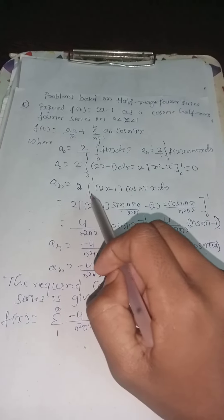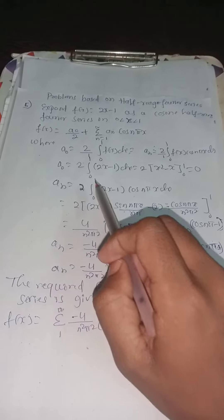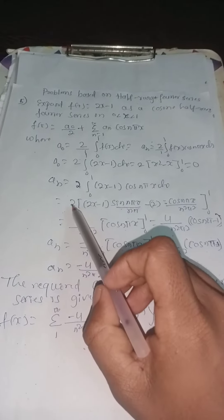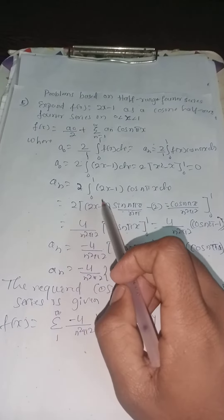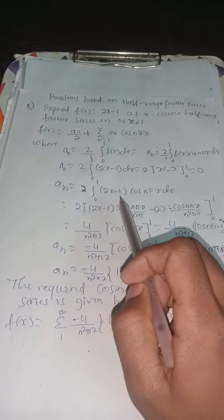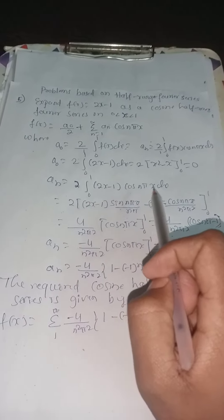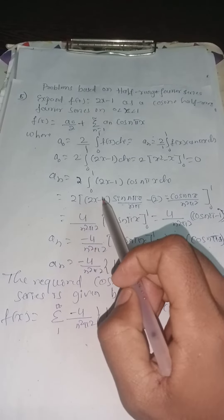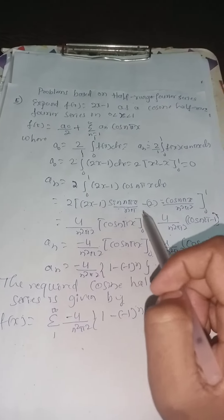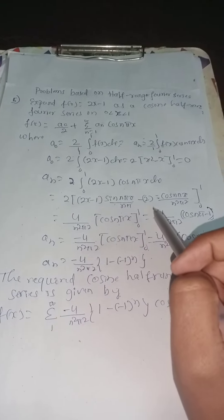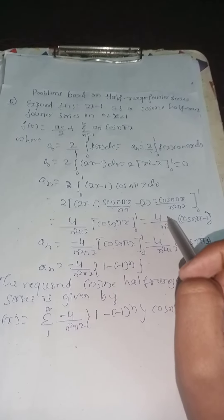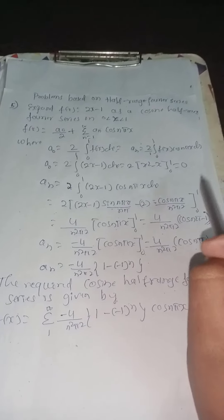an equal to 2 times integration from 0 to 1 of (2x - 1) cos(nπx) dx. Applying integration by parts: 2 times [(2x - 1) sin(nπx) divided by nπ minus 2 times (minus cos(nπx) divided by n squared π squared)] with limit 0 to 1.